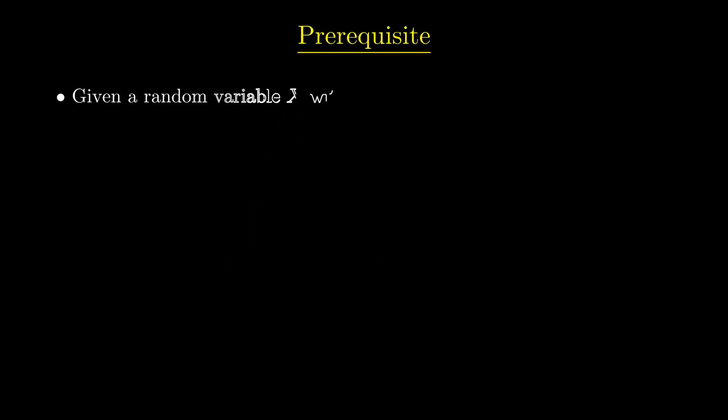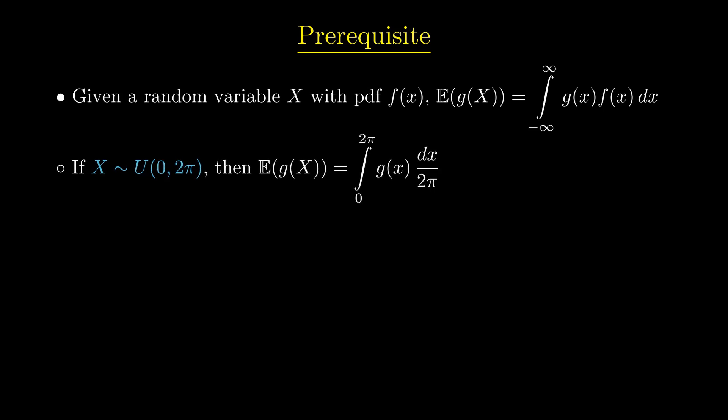First, given a random variable x with a probability density function f, the expected value of a function g will be the integral of g times f. Specifically, if x were uniformly distributed in the interval 0 to 2π, then the expected value of g will be 1 by 2π times the integral of g from 0 to 2π.